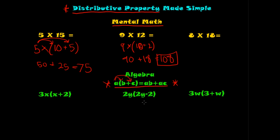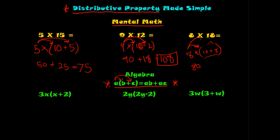So you can quickly solve that problem with just a couple of steps in your head. Now let's try 8 times 18. 18 is a combination of 10 plus 8 — I'm choosing easy numbers like tens because you want to split it into groups that are simple to compute. So 8 times 18 becomes 8 times 10 plus 8 times 8. Distribute the 8 through: 8 times 10 is 80, and 8 times 8 is 64.